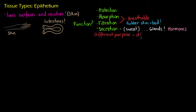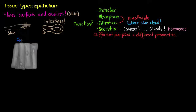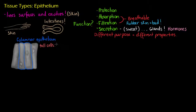Now that we've listed all those functions, we can see that these cells could not possibly all look exactly the same — their structure has to reflect their function. The first distinct type of epithelial cell we're going to look at is called columnar epithelium. As we can see on the diagram, this columnar epithelium is relatively column-shaped — that's where it gets its name. These cells are tall, and their functions are mainly filtration, absorption, and mucus secretion.